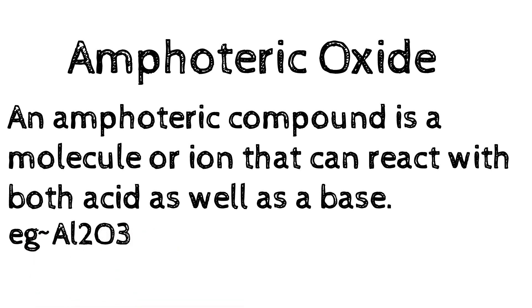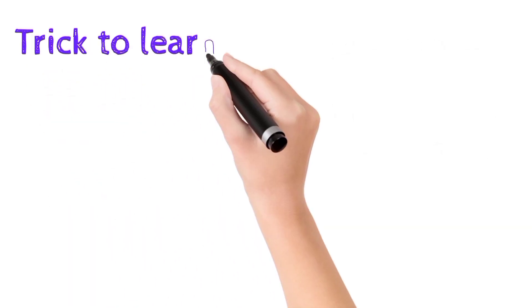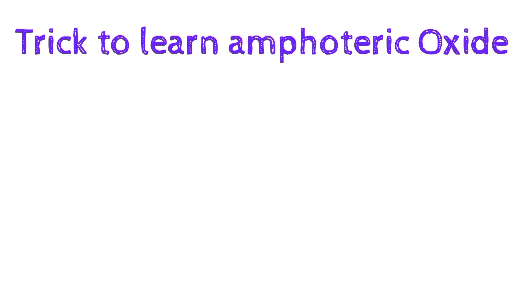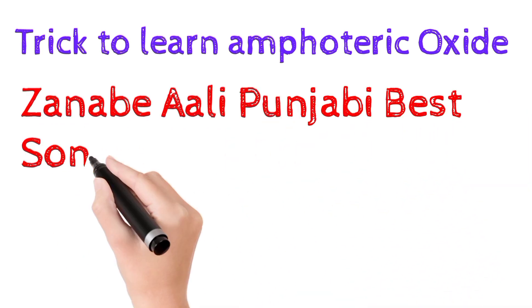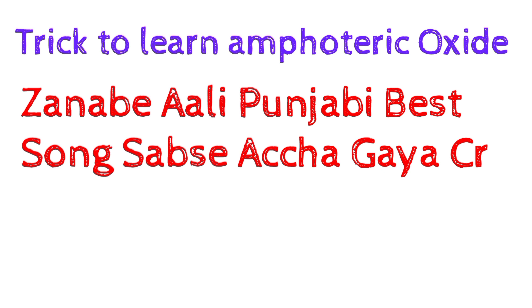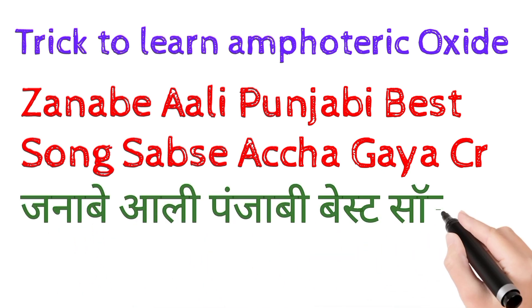Elements like Zinc and Aluminium are examples. Now I am going to tell you the trick to learn amphoteric oxides, and the trick is: Janabe Ali Punjabi Best Song Sab Se Achcha Gaya Kar.